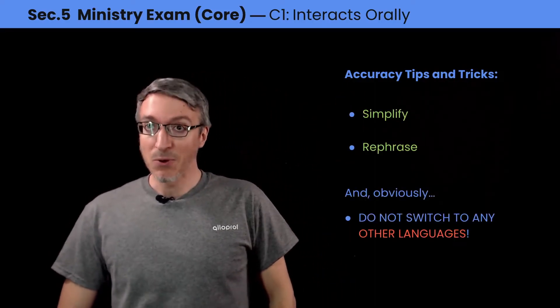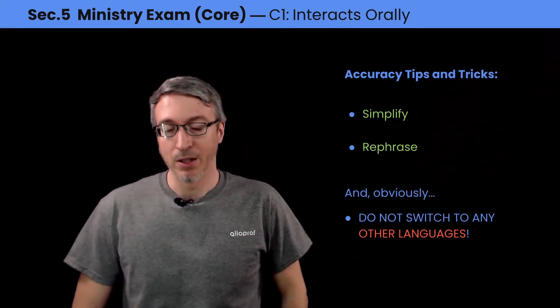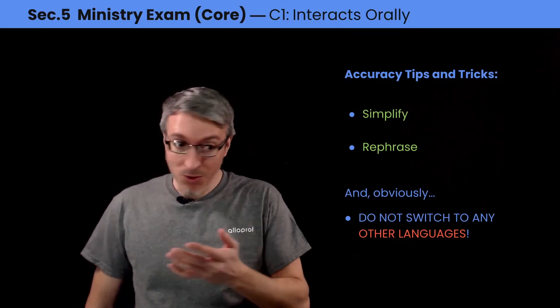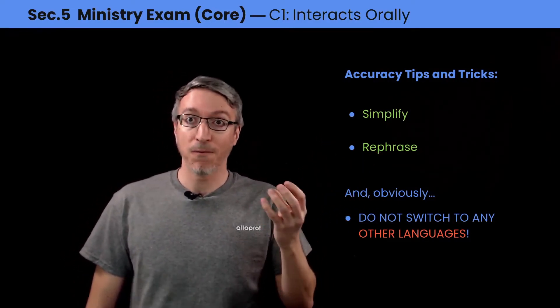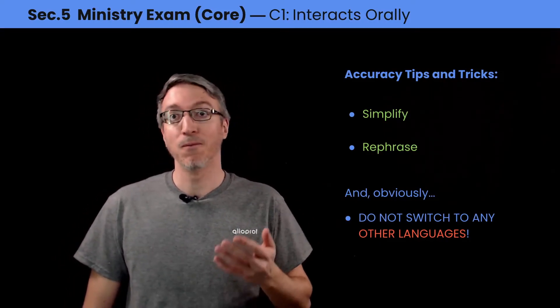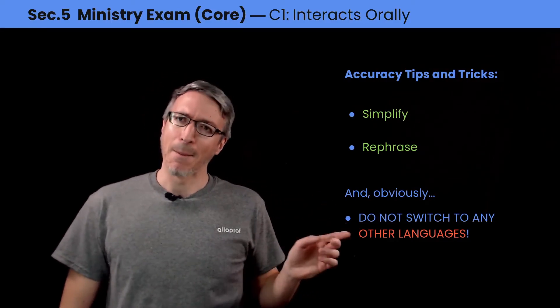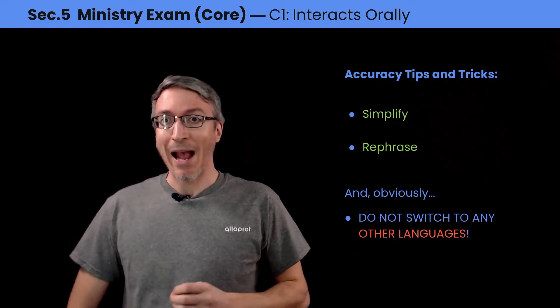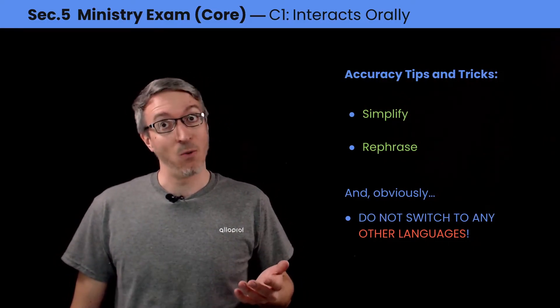For accuracy tips and tricks: if you're unsure of your sentences, simplify your message — it will be clearer for everyone around the table and better for you. If you're unsure of how to say things, rephrase and reformulate your sentence to make it simpler. Do not switch to any other languages — it will result in a failure. Remember the secret: breathe, pause and think, structure your thoughts, and interact with people around you. All those strategies will help you succeed in your C1 final evaluation.